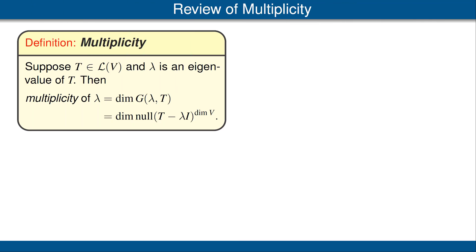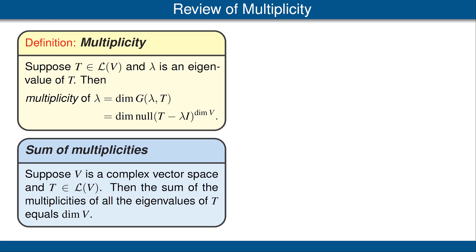Let's quickly review a definition and a result concerning multiplicity. Suppose T is an operator on V and lambda is an eigenvalue of T. Then the multiplicity of lambda is defined to be the dimension of the generalized eigenspace corresponding to the eigenvalue lambda, which equals the dimension of the null space of T minus lambda I raised to the power dim V. We have a standing assumption that V is finite dimensional. For a complex vector space, the sum of the multiplicities of all eigenvalues of T equals the dimension of V.